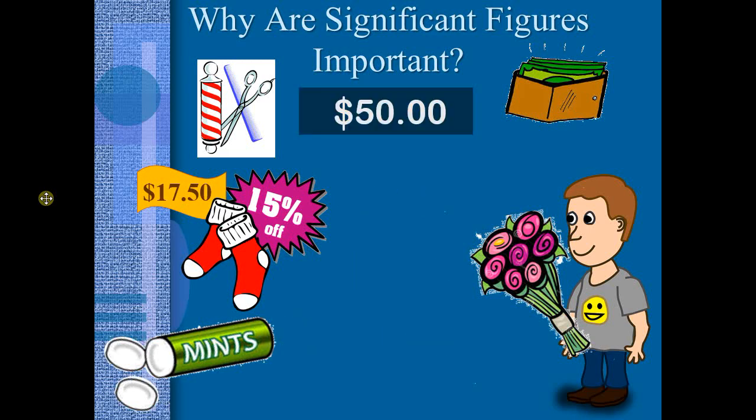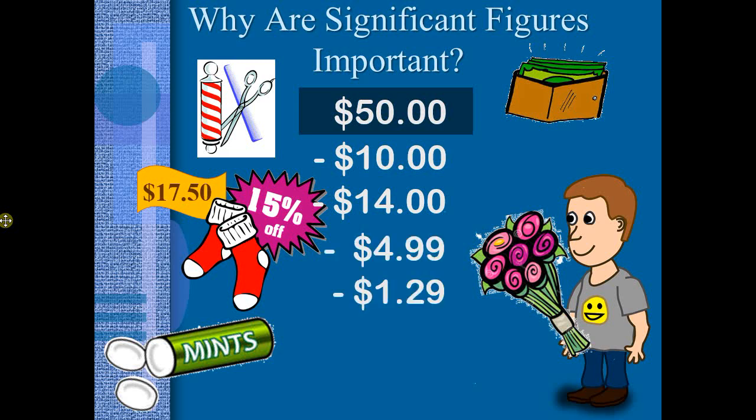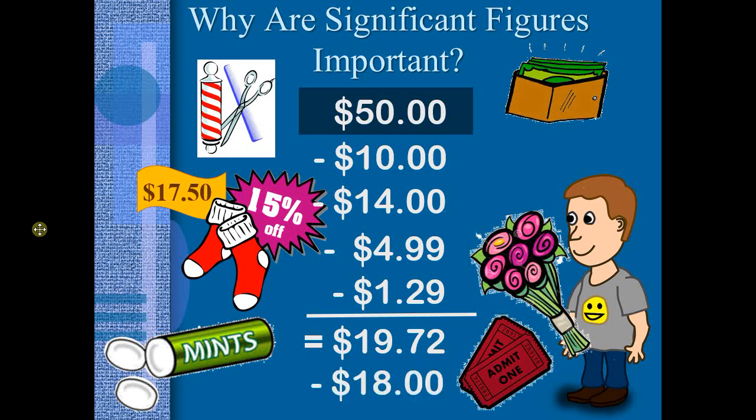He says, this should work. I got about $50 in my wallet. So I spent $10 on a haircut, about $14 on my socks, $4.99 for my flowers, $1.29 for my breath mints. I still have $19.72 left. My tickets to the movie are going to cost me $18. I'm in business. I'm going to have a whole $1.72 left over. So we are good to go.